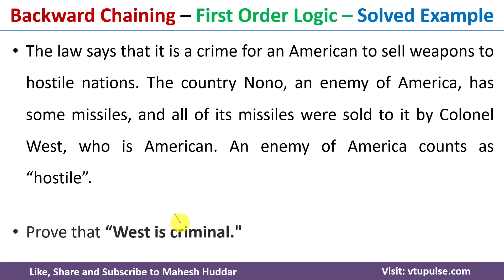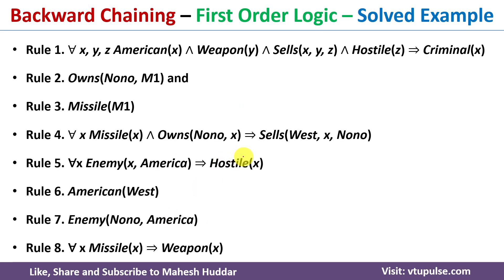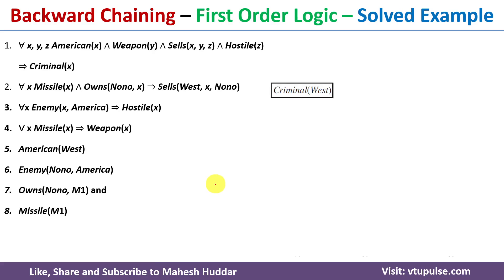In this case, we need to prove that West is a criminal. Once you convert the given problem definition into a set of first order logic statements, we will get the following clauses — there are totally eight clauses. Once you have the clauses, we need to divide them into two parts: one is known as rules, and the other is known as facts.